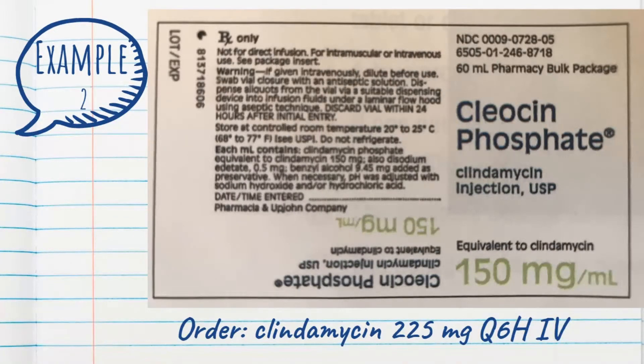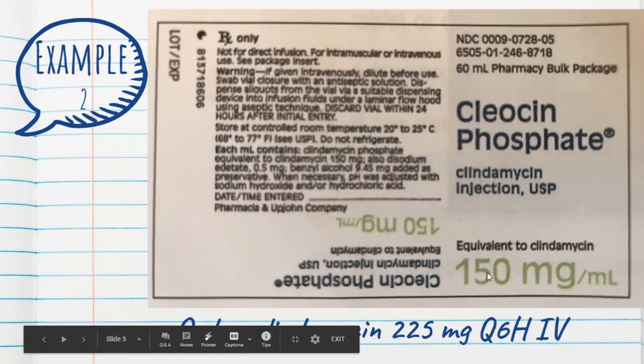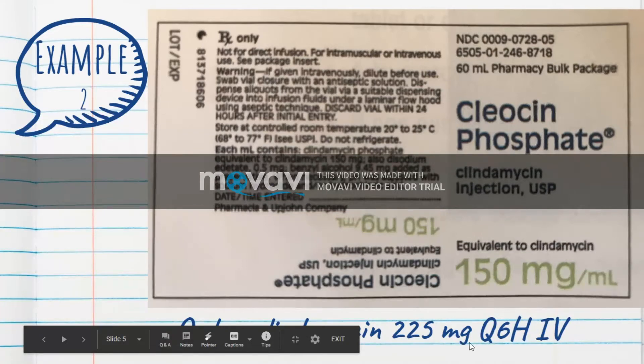So here's example number two. We have a label here. In addition to doing the math, we need to be able to read the label correctly. Our label says we have 150 milligrams in 1 mL. So our order says clindamycin, 225 milligrams, every 6 hours, IV.